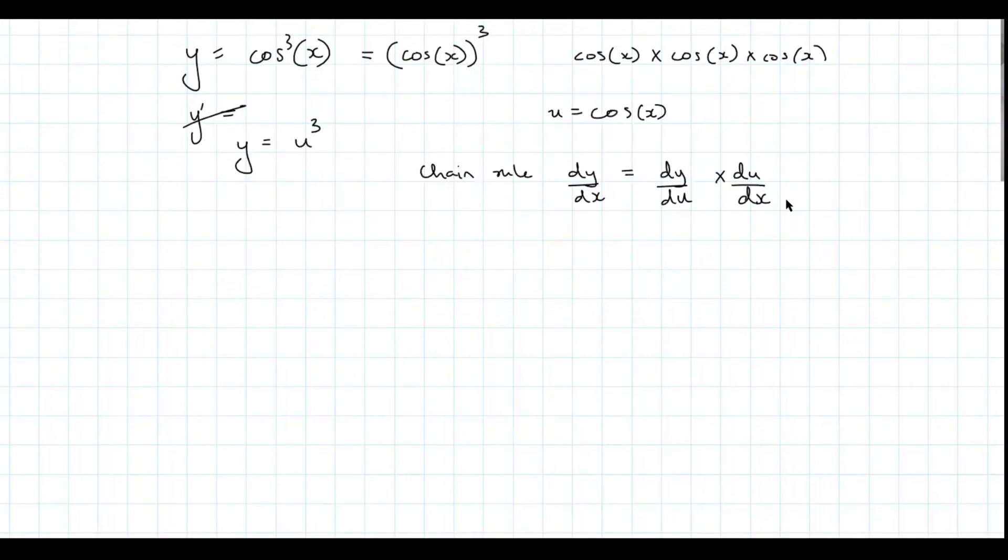So in this case, our u is cos x, so then our du on dx is going to be, so what's cos x derived? Negative sine x? Yeah, so sine cos negative sine. So yeah, cos derives to negative sine.